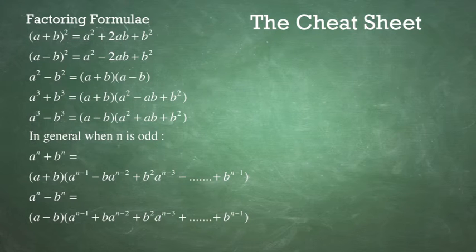In this case, A to the N minus B to the N, the first term is A minus B, and in the second term, the signs are all plus.